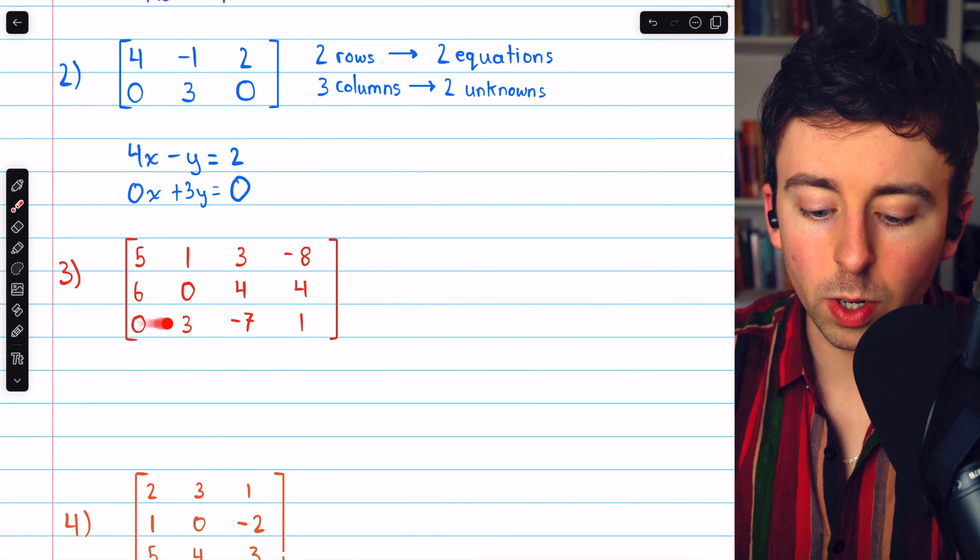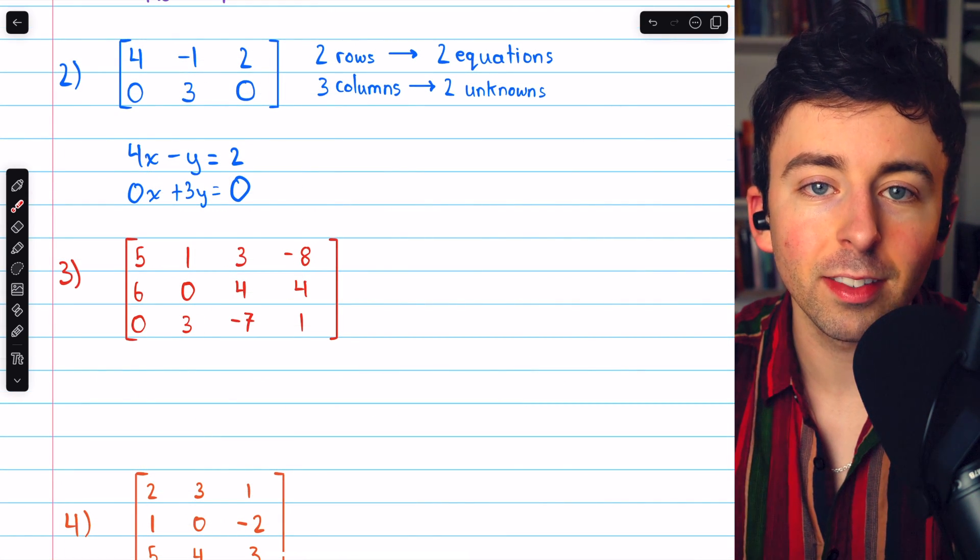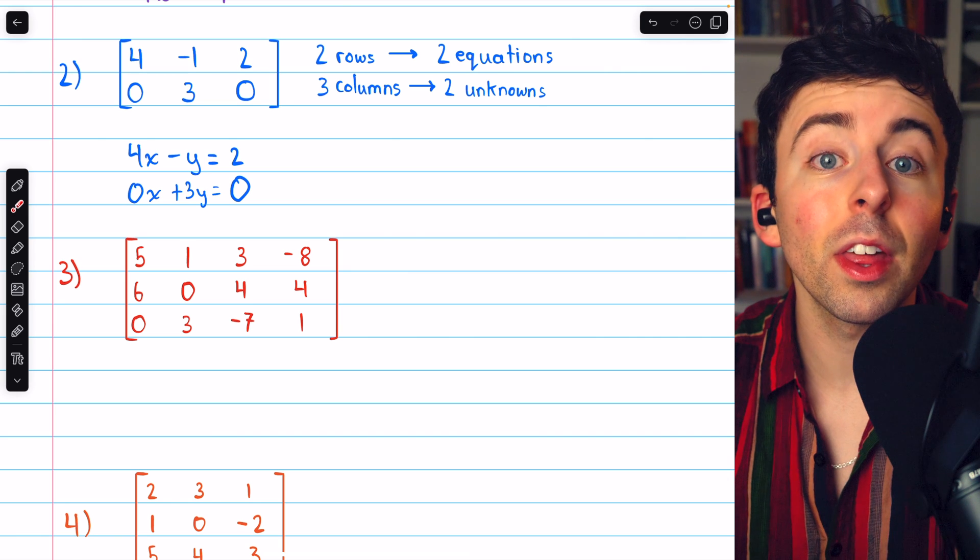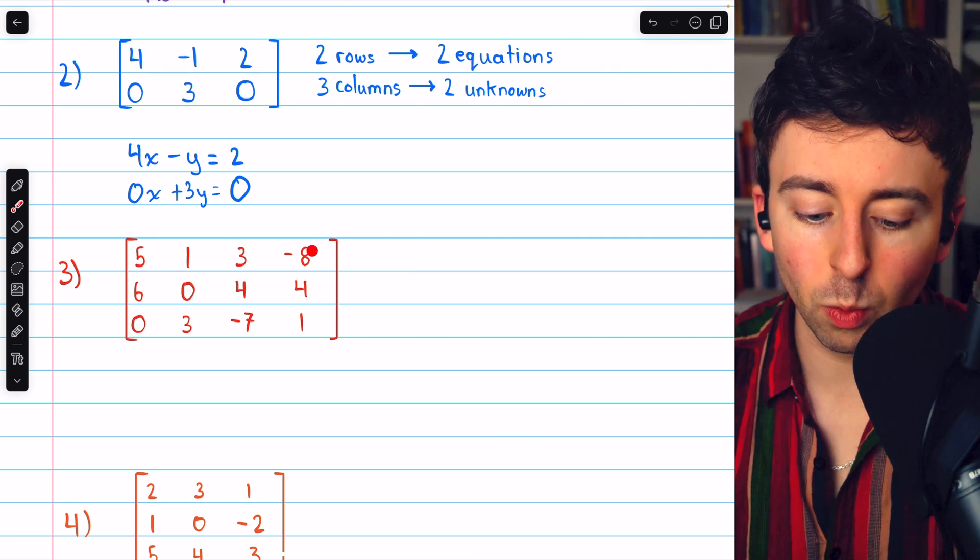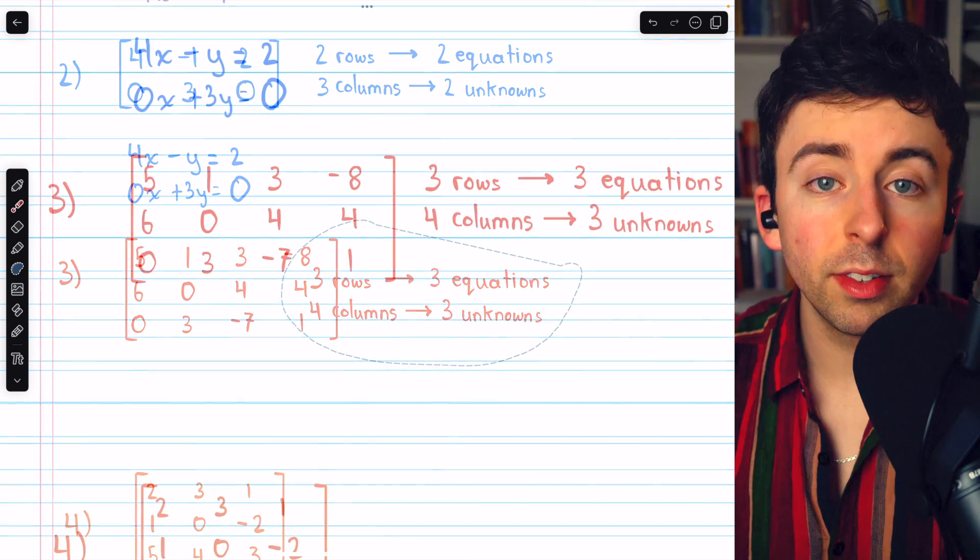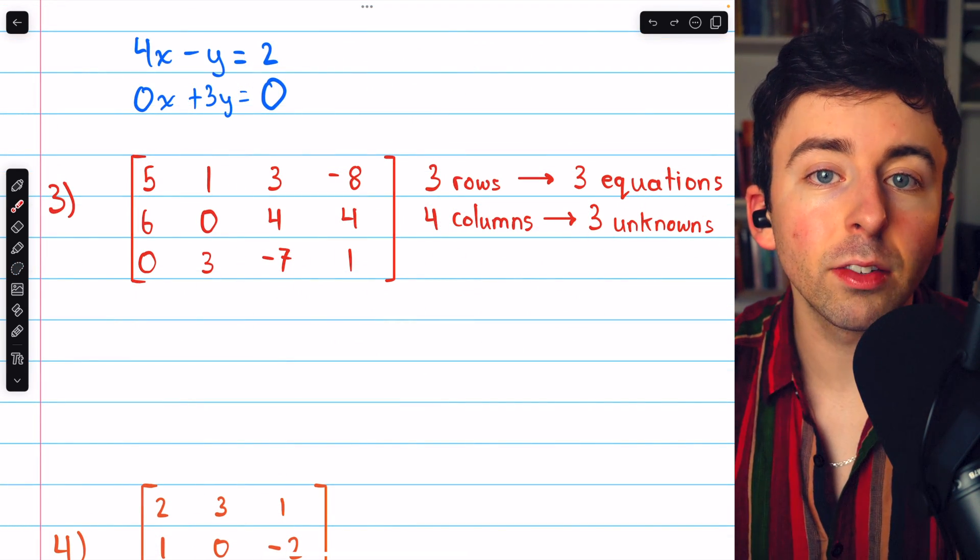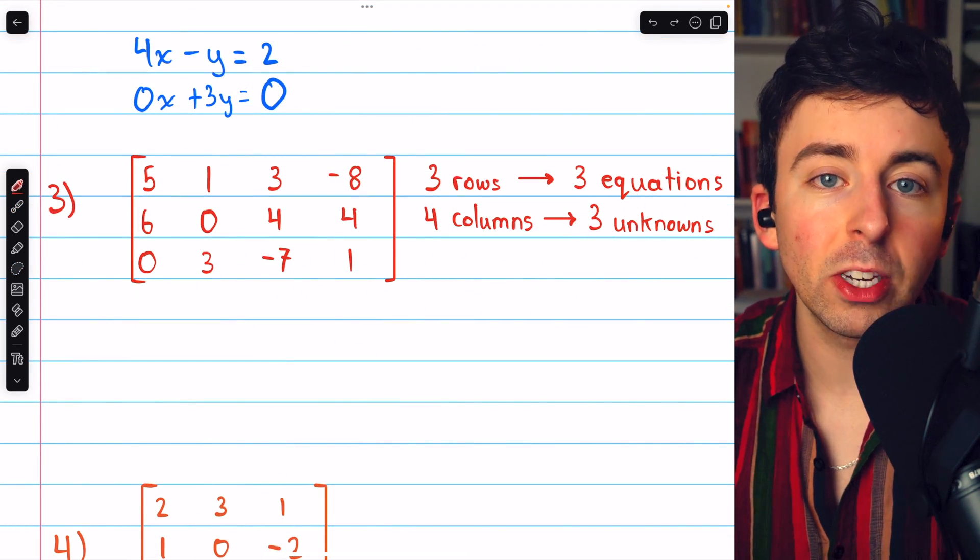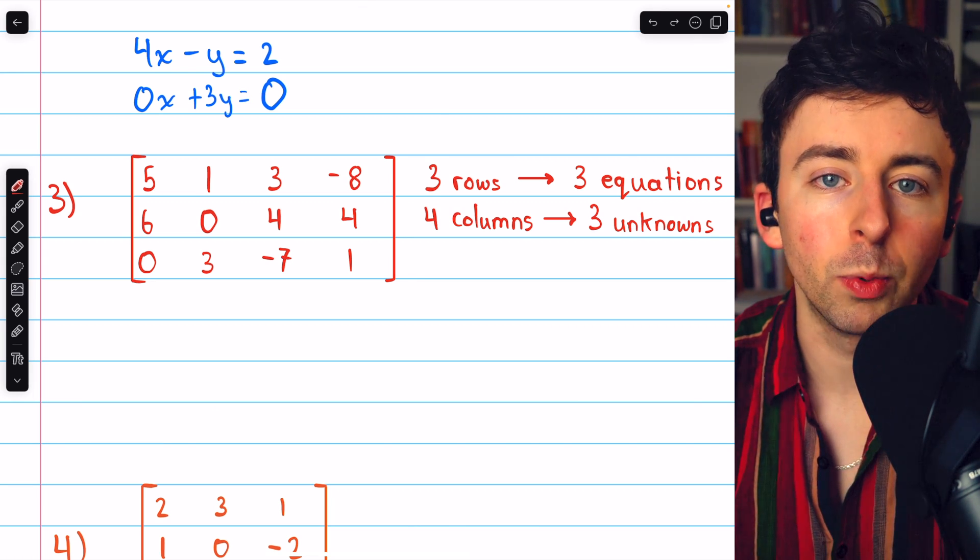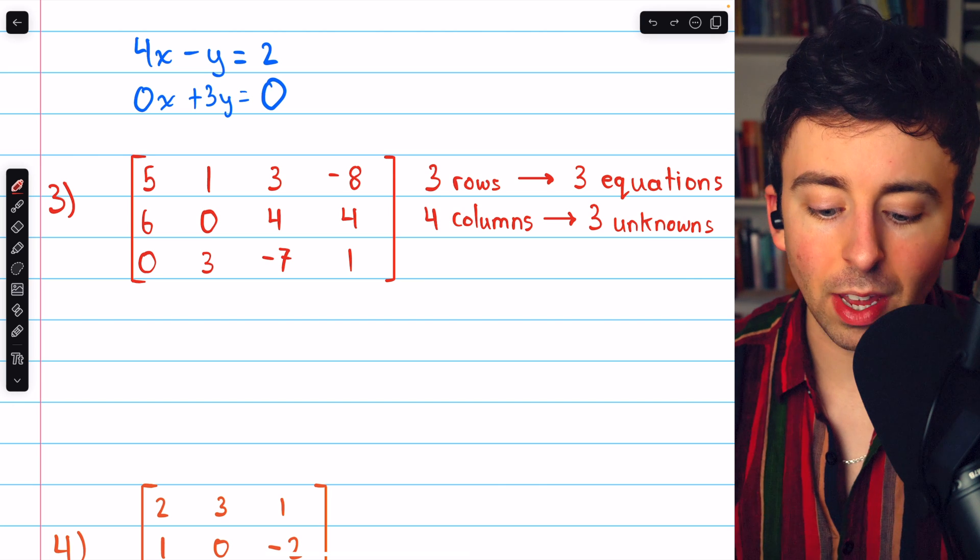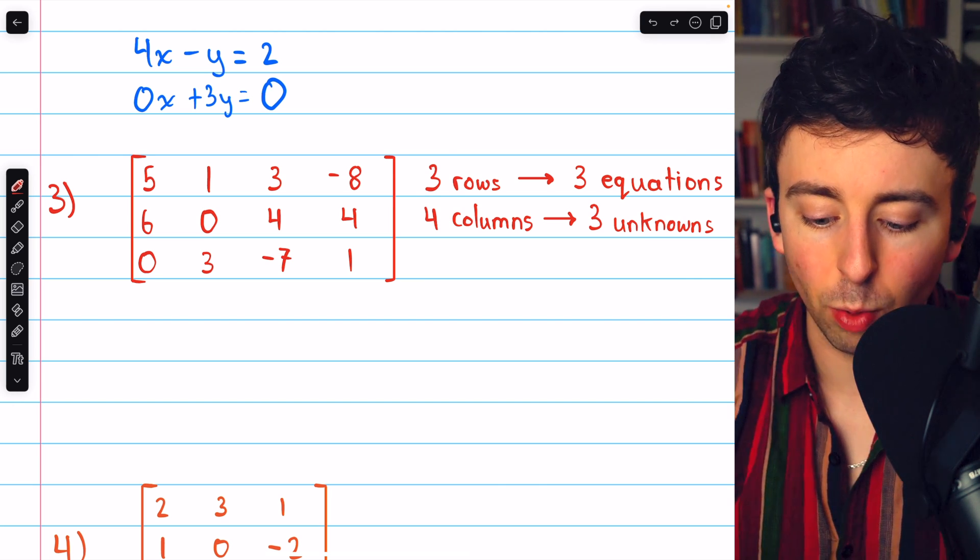This next example is a 3 by 4 matrix, so three equations with three unknowns. Three columns for the unknowns, and one column for the constants. Since we have three unknowns, X, Y, and Z would be a common choice, but we could also use subscripts so that we don't have to keep coming up with new letters. Let's say we use X1, X2, and X3.